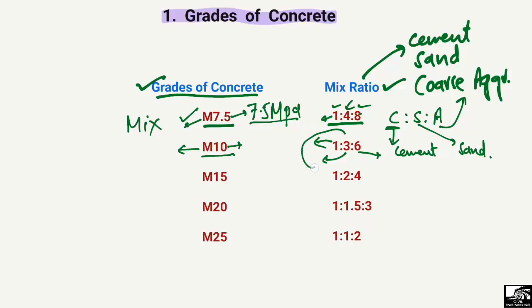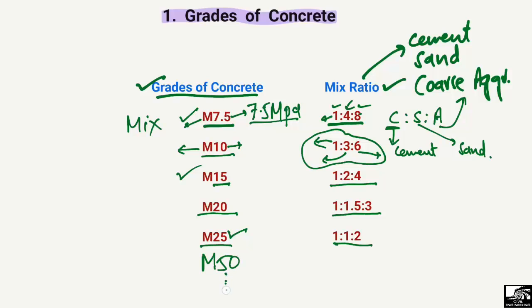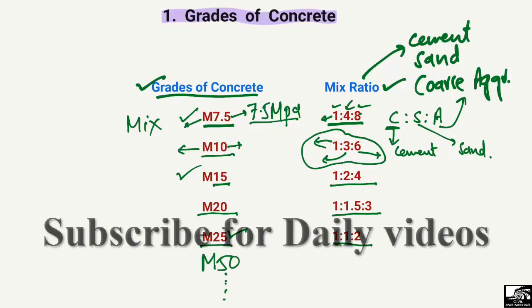Going further, we have M15, which is 15 MPa strength, with a ratio of 1:2:4. M20 has a ratio of 1:1.5:3, and M25 has a strength of 25 MPa with a ratio of 1:1:2. We also have higher-strength grades such as M50 and above, but those have different mix ratios that we will not cover here.